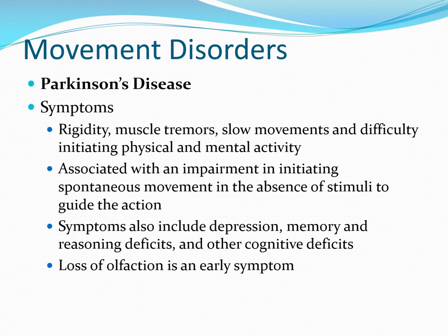Looking at movement disorders and what's going on in the basal ganglia helps make sense of the kinds of disorders that result. Parkinson's disease is specifically caused by loss of neurons in the substantia nigra — those neurons that send dopamine, both excitatory and inhibitory, into the striatum. Symptoms include rigidity, muscle tremors, unwanted movements, and slow movements.